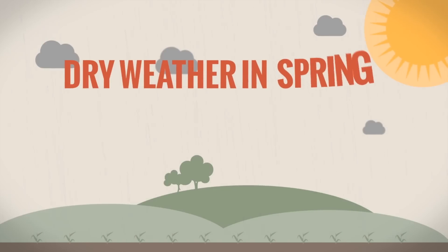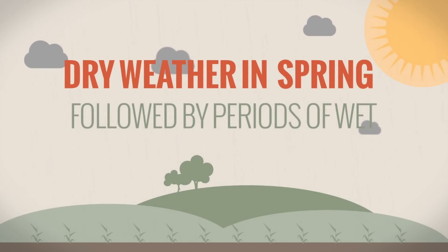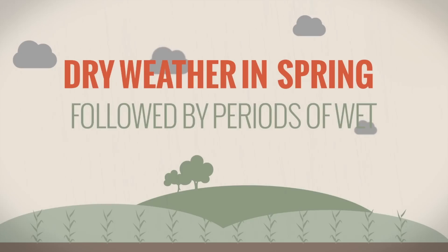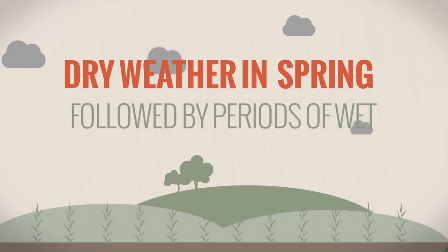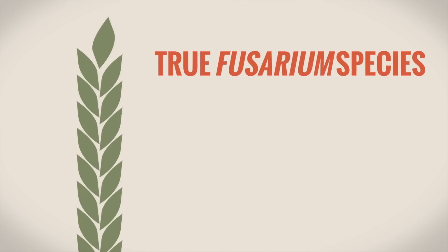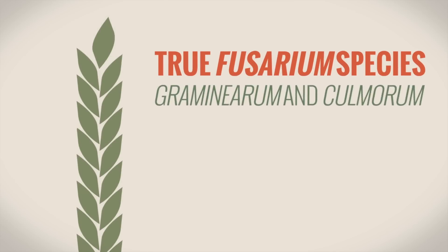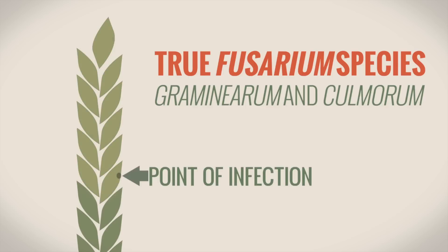Dry weather in early spring, followed by periods of wet, provide the ideal conditions for the development of the inoculum. The True Fusarium species Graminearum and Culmorum will destroy soft green tissue in the ear, cutting off nutrient flow above the point of infection, seriously reducing yield potential.